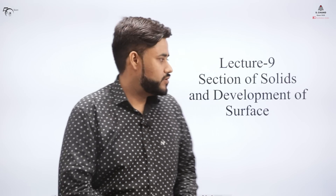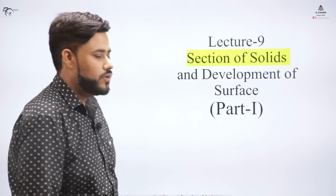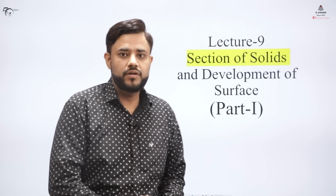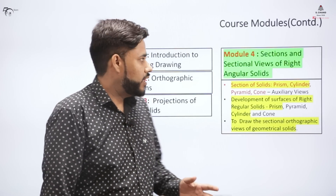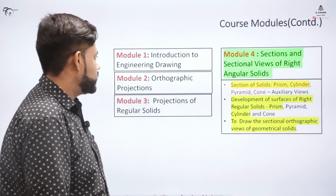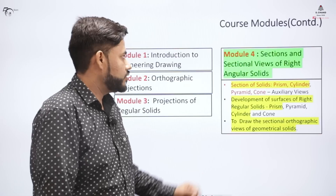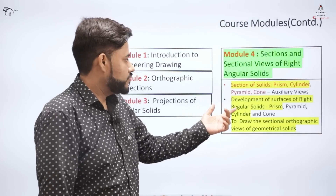This is lecture number nine of the engineering drawing course series. In this lecture we'll be learning about sections of solids and development of surfaces. In part one we'll study sections of solids, and in the next part of the same lecture we'll cover development of surfaces. We have already covered three modules of the course and are now on the fourth module.